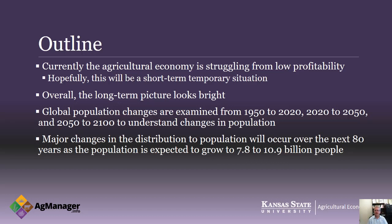Currently the ag economy is struggling from low profitability, but I think this is going to be a temporary short-term situation. The long-run dynamics of population and income growth will continue to fuel agriculture over the next several decades. We're going to focus on population changes today, looking at three periods: 1950 to 2020, 2020 to 2050, and 2050 to 2100. Major changes in the distribution of population are really going to be a driver of agriculture over the next 80 years.